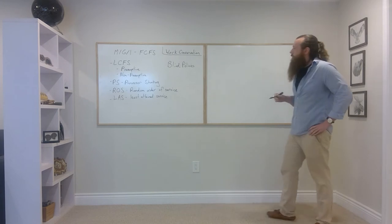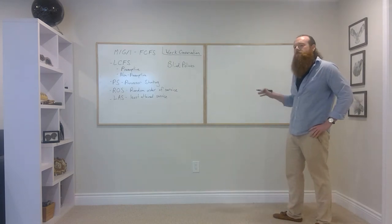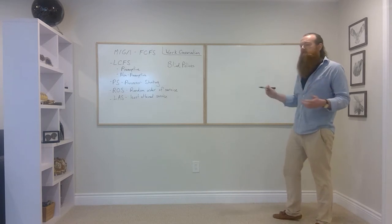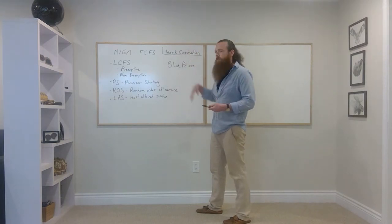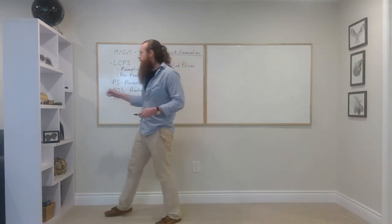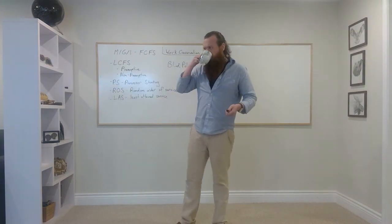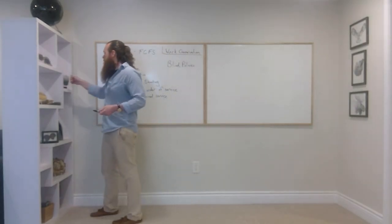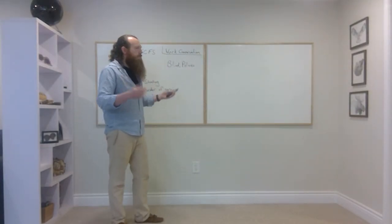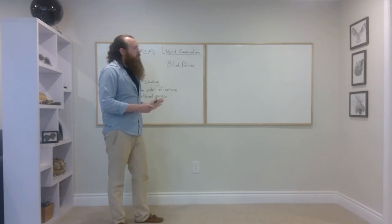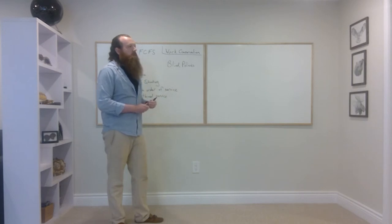Welcome back. Before the break we were looking at different service disciplines, different service policies, and we were wondering when is it advantageous to use one over the other — like when is it advantageous to use least attained service over first come first serve. We realized that question is actually highly coupled to another question: if I look at a job that's been processed for t time units, what's the expected remaining time that job needs to be processed?